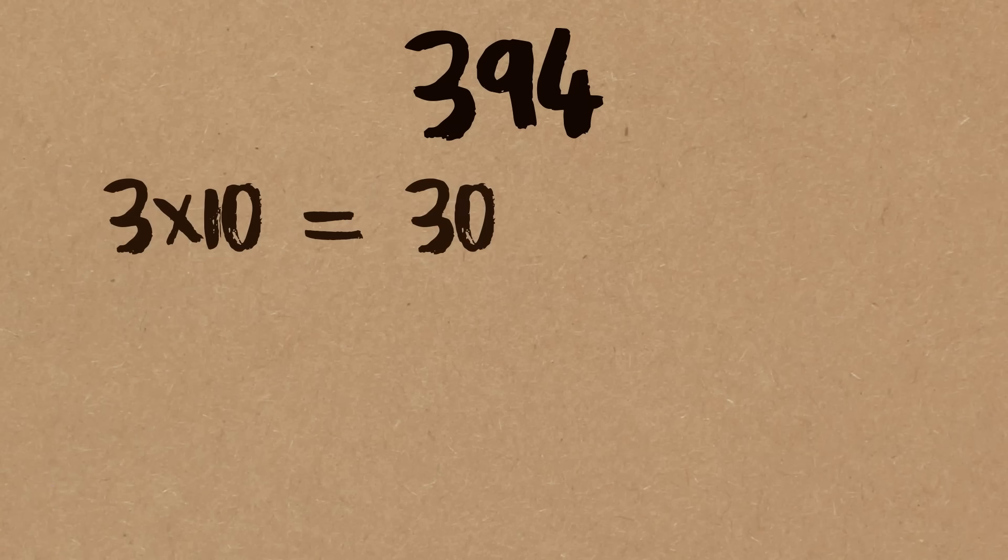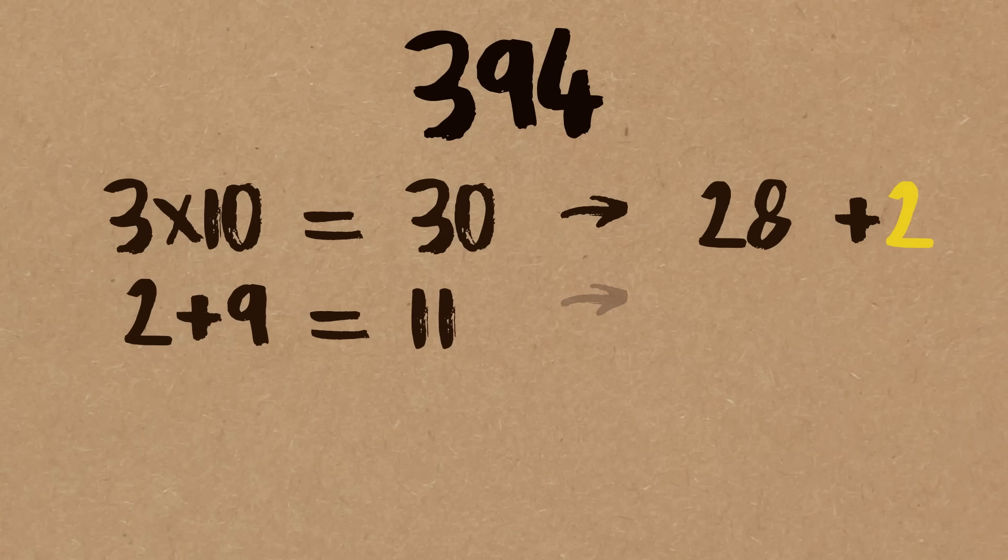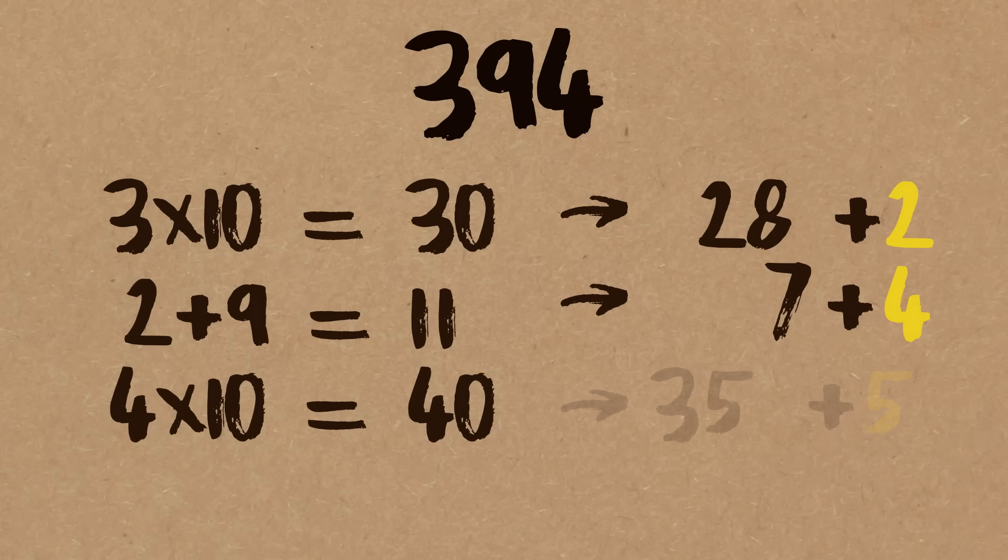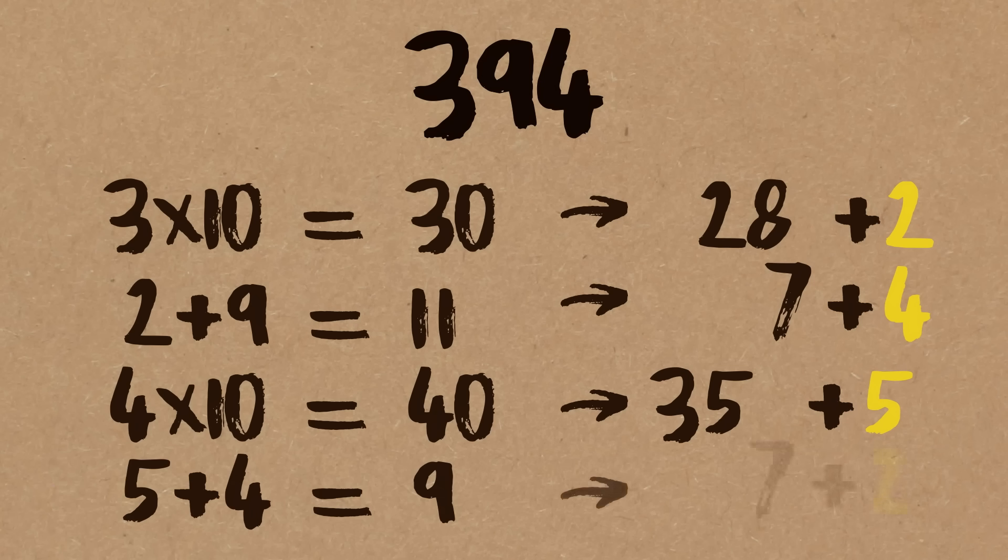So we did three hundred and ninety-four. We could do it in our heads. Start with three. Times ten. Thirty. Reduce it. Two. I can do that in my head. Add the next digit, which is a nine. That's eleven. Too big. Reduce it. Gives me a four. Multiply by ten is forty. Okay, that's a five left over. Add the next digit. That's a nine. Reduce it. Two. So you can do that in your head.